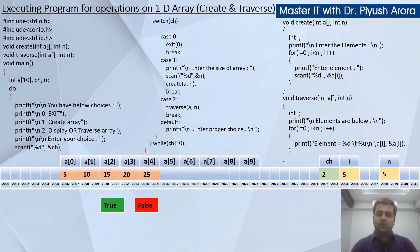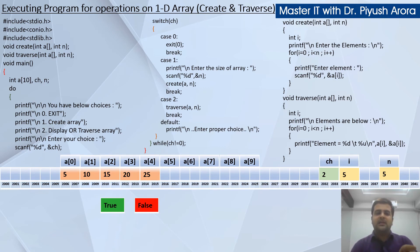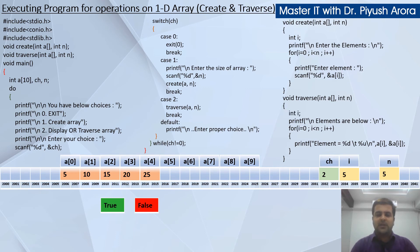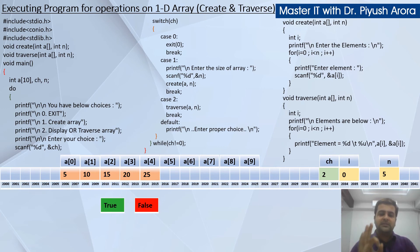Now suppose the user enters 2 because they have already created the array and now want to display it. Switch(2) with opening bracket goes to case 2. The traverse function is called: traverse(a, n) — traverse is the function name, a is the array, and n is the size which is 5. The function declaration is checked: void traverse(int a[], int n); with a semicolon. Execution goes into the function definition. Opening bracket, int i is declared. The for loop starts: for(i=0; i<n). i is re-initialized to 0 even though it was 5 before. Condition: 0<5 is true.